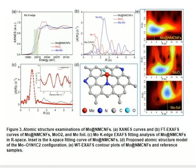Panel D is the proposed atomic structure model of the Mo catalyst configuration, and panel E is the EXAFS contrast plot of the Mo catalyst and reference samples.